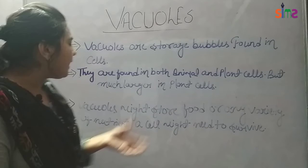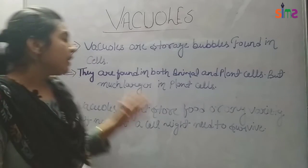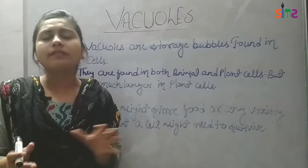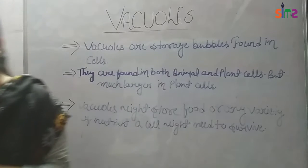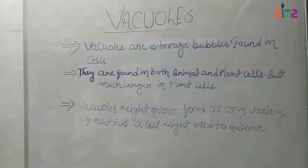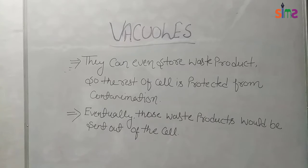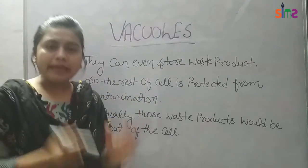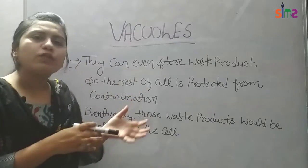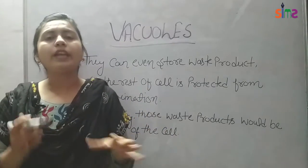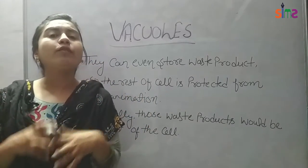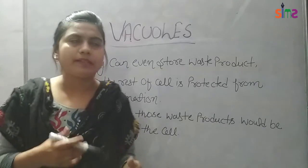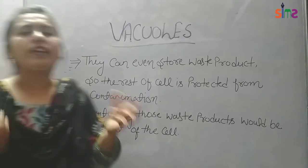Vacuoles might store food or any variety of nutrients a cell might need to survive. What this means is that vacuoles store our food and any type of nutrients which should be stored in our cell to be used to survive. They also store waste products, so the rest of the cell is protected from contamination.